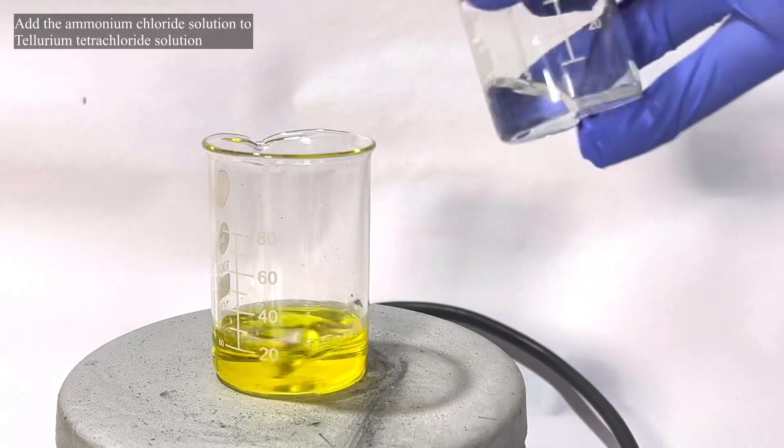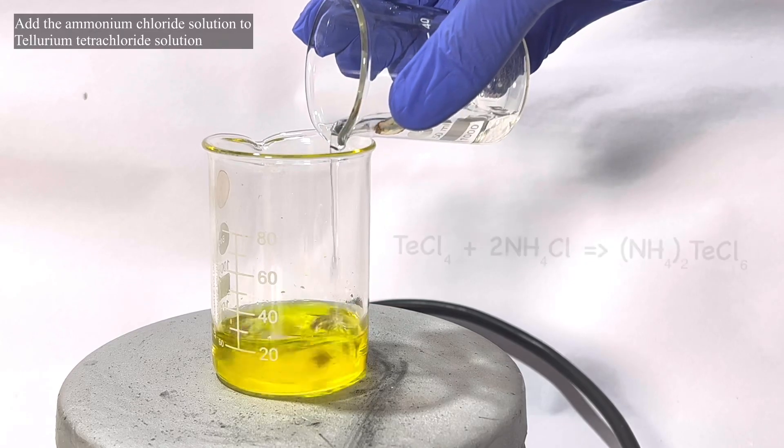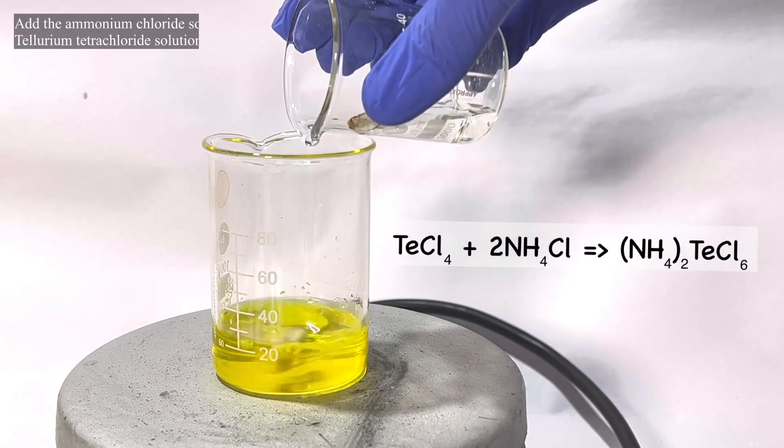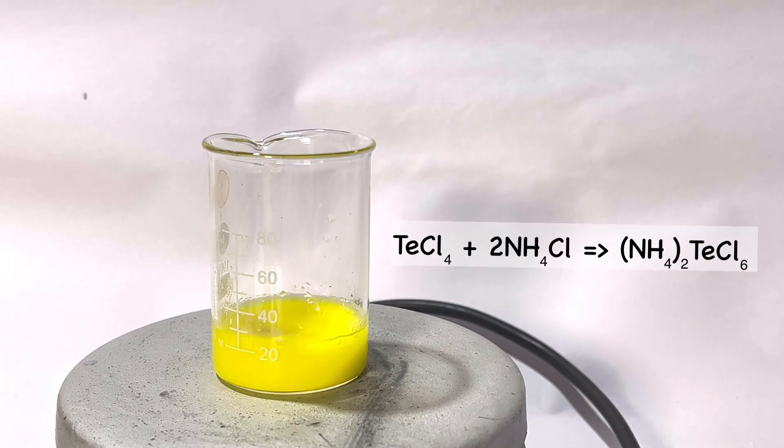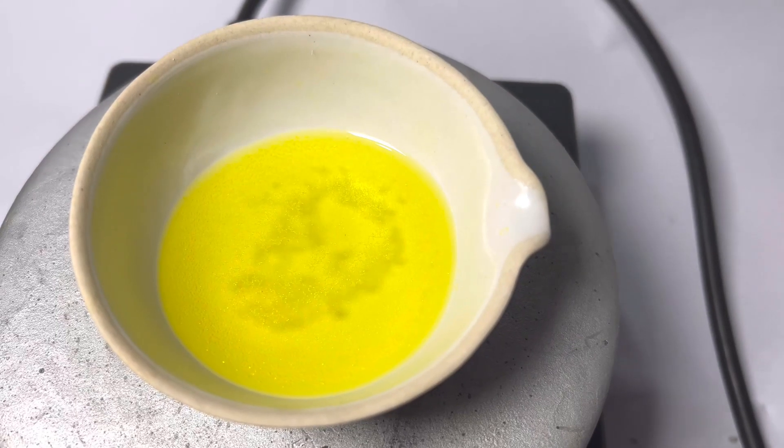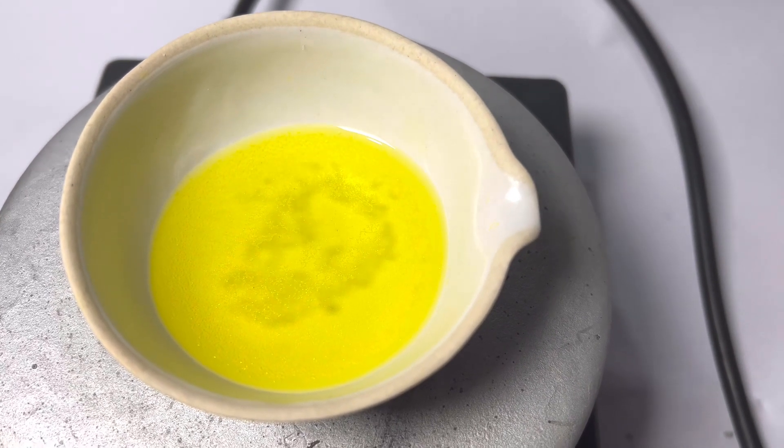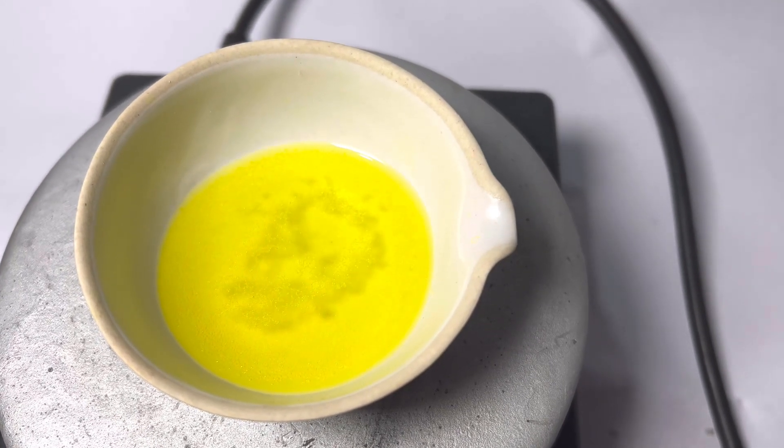The ammonium chloride solution was added to the tellurium tetrachloride solution, and all of a sudden bright yellow precipitate of ammonium hexachloride tellurate precipitates out. I wished I could see some of the crystals grow, so I quickly filtered the solution and allowed the filtrate to sit for some time. Soon some minute crystals were then seen in the porcelain dish.